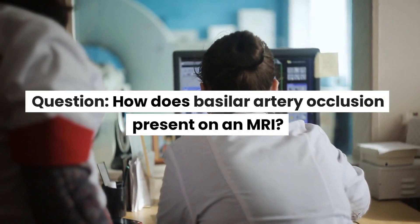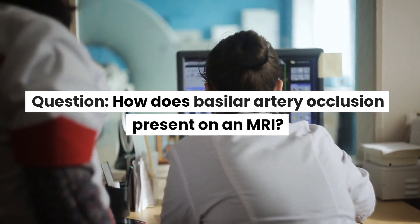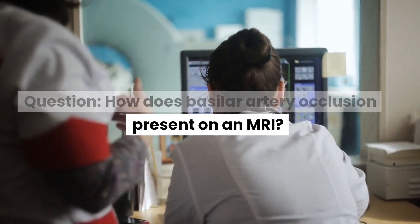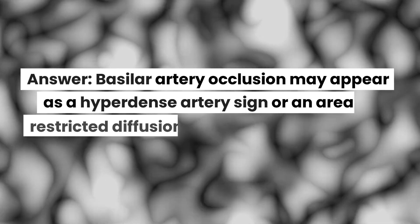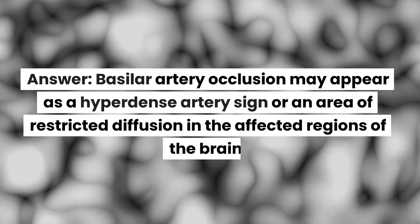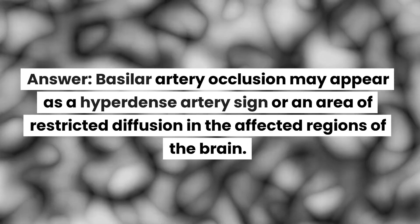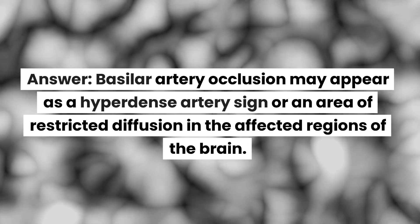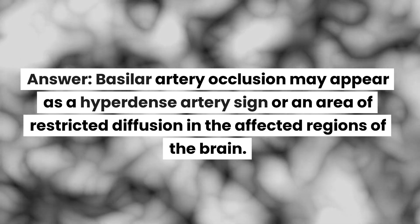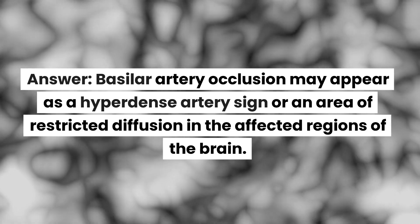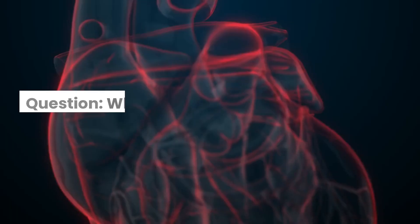How does basilar artery occlusion present on an MRI? Basilar artery occlusion may appear as a hyperdense artery sign or an area of restricted diffusion in the affected regions of the brain.